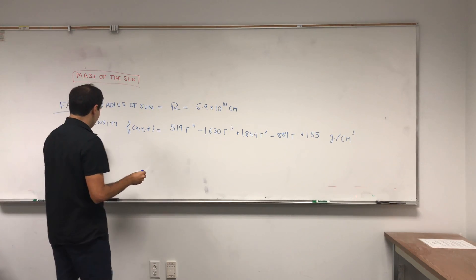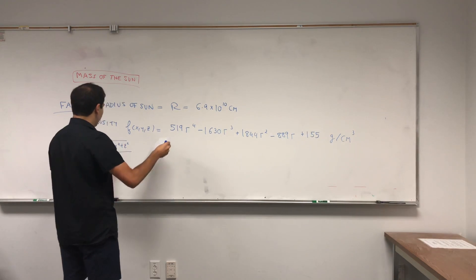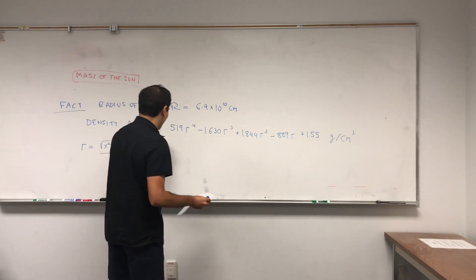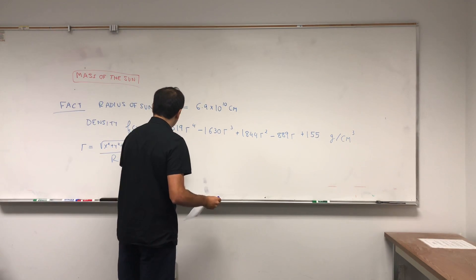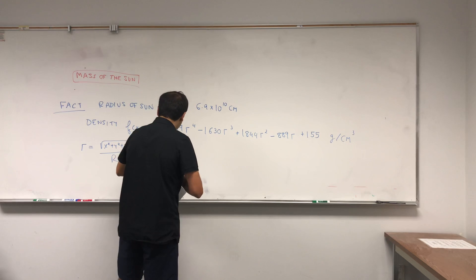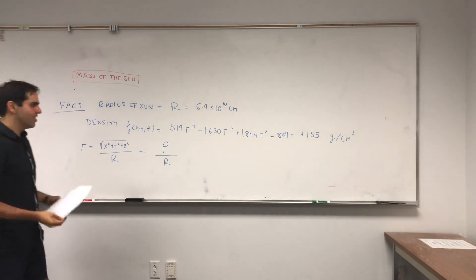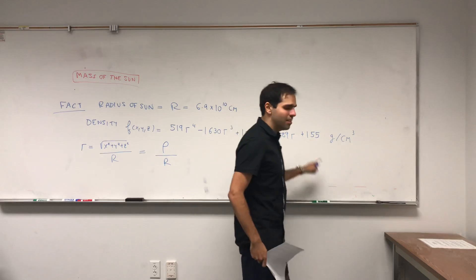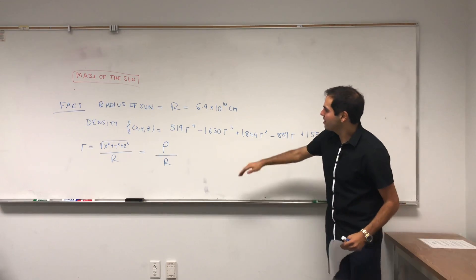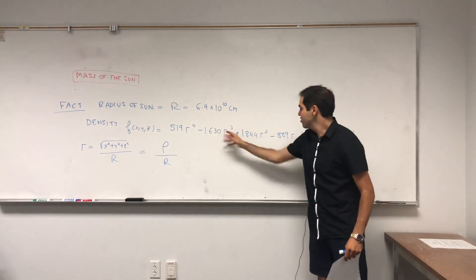Little r is just the square root of x² plus y² plus z² over the radius R, which we can write conveniently in terms of spherical coordinates as rho over capital R. Essentially, at the core of the Sun where r equals zero it's not very dense — just 155 — but the more you approach the actual radius of the Sun, the more dense you get if you sum up all those numbers.